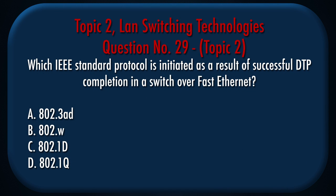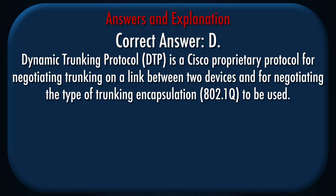Question number 29, Topic 2. Which IEEE standard protocol is initiated as a result of successful DTP completion in a switch over fast Ethernet? a. 802.3 AED. b. 802.1W. c. 802.1D. d. 802.1Q. Correct answer: d. Explanation: Dynamic Trunking Protocol (DTP) is a Cisco proprietary protocol for negotiating trunking on a link between two devices and for negotiating the type of trunking encapsulation, 802.1Q, to be used.